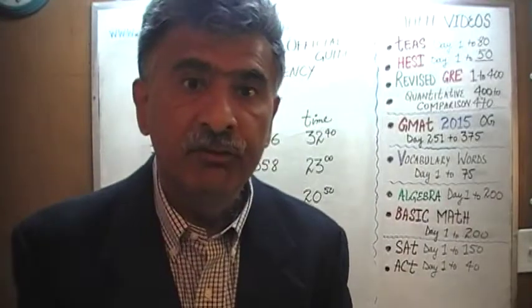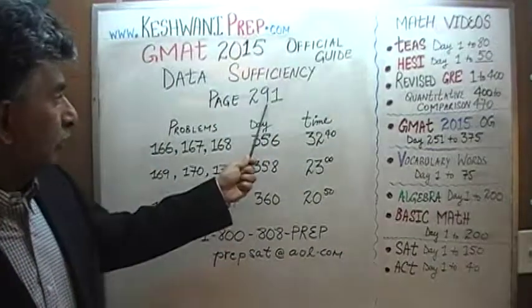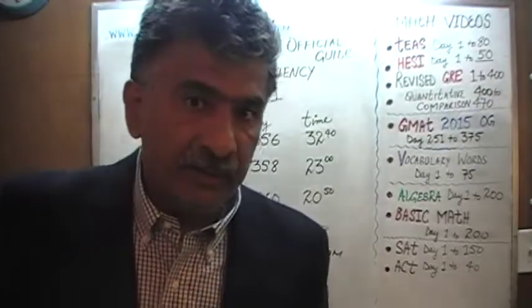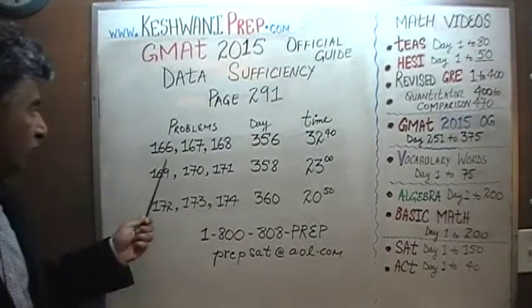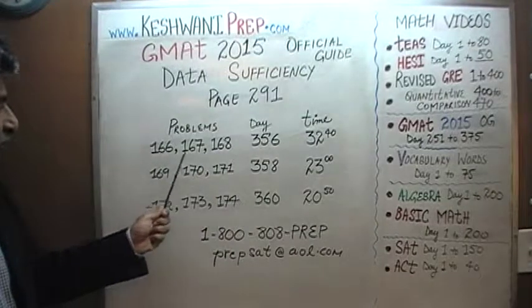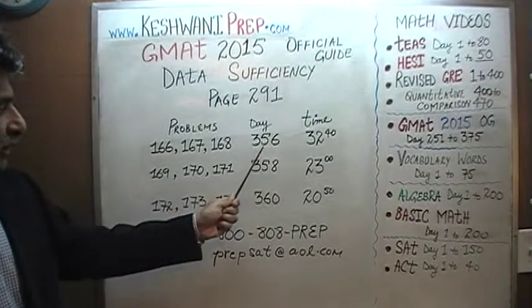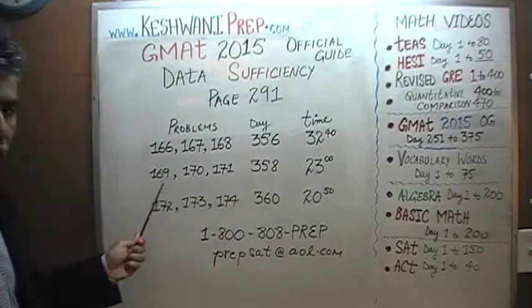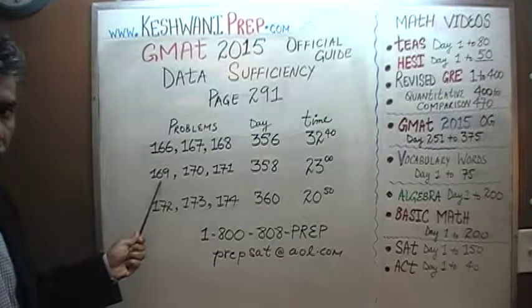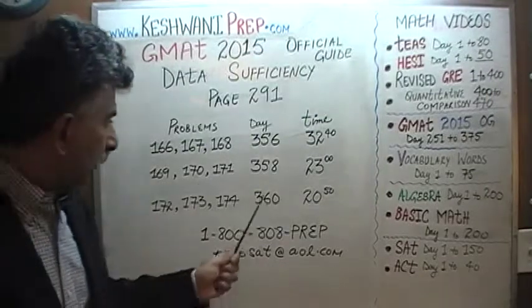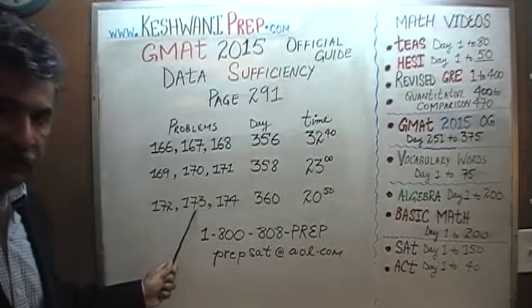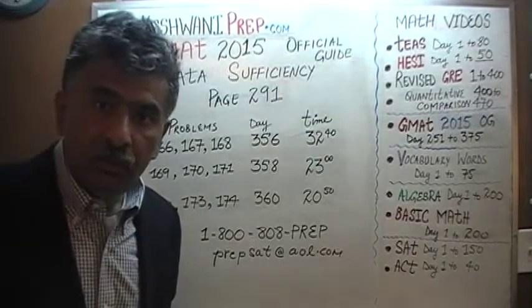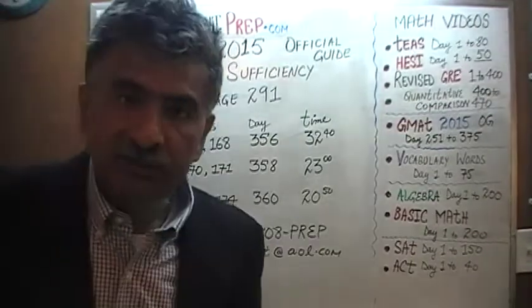Today we're going to look at all the data sufficiency problems appearing on page 291 — the very last page in the set of data sufficiency problems. On page 291 you will find nine problems. Solutions to problems 166, 167, and 168 are on day 356. Solutions to problems 169, 170, and 171 are on day 358. Finally, the last three problems — 172, 173, and 174 — are on day 360.